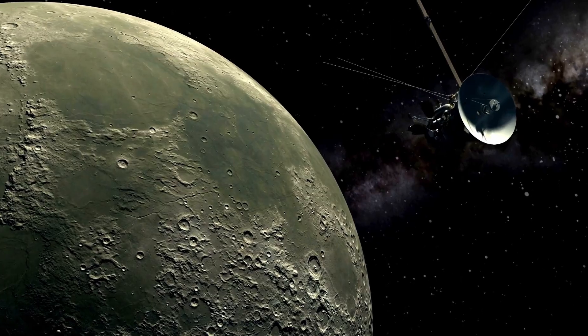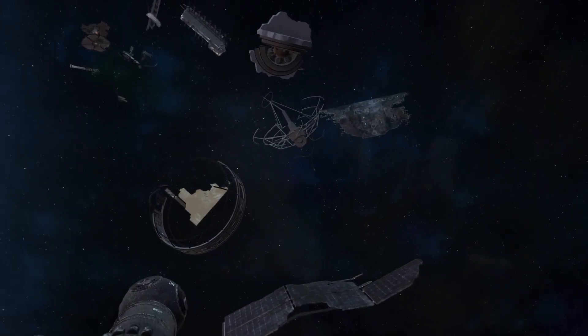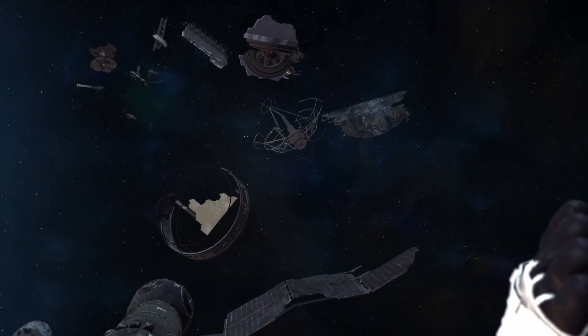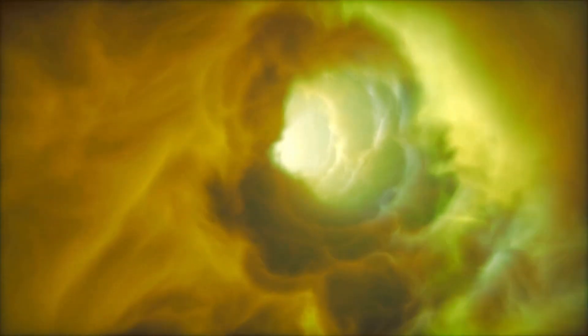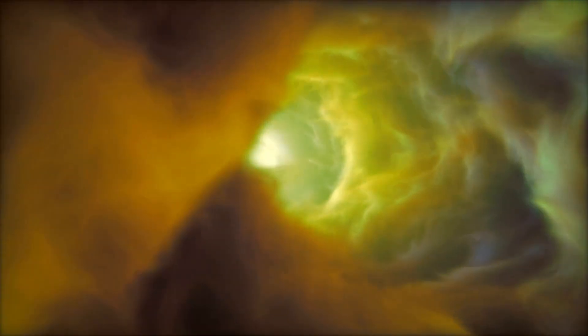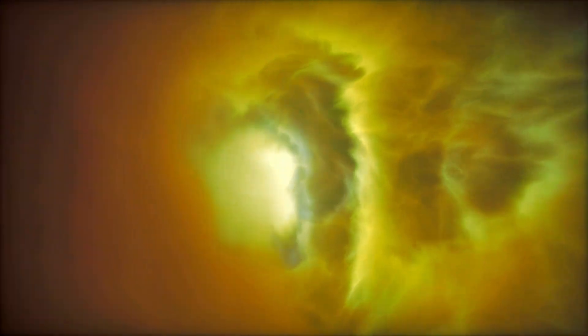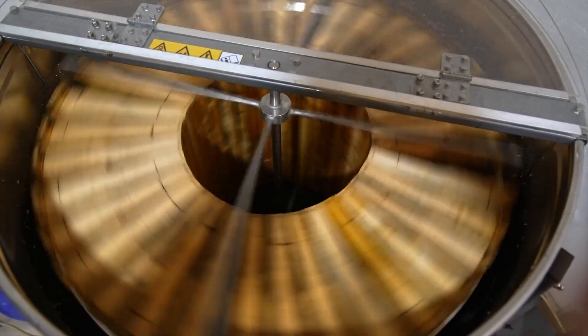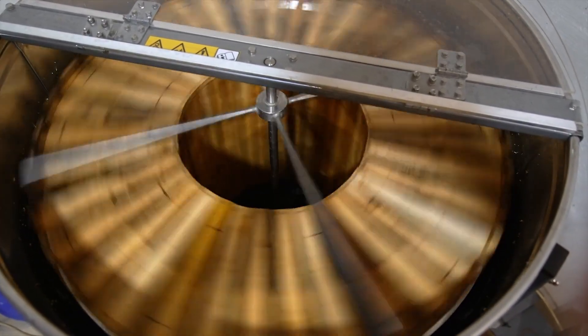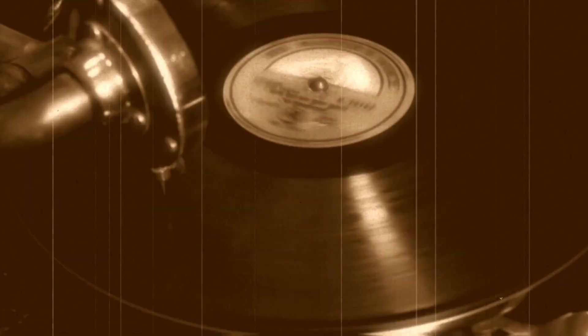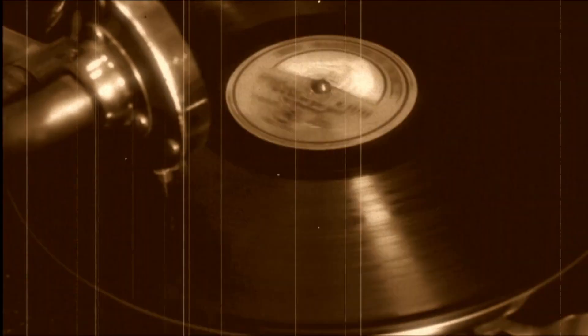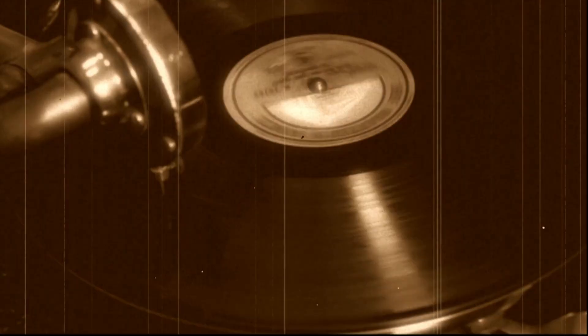Voyager, one now more than 14 billion miles from Earth, has returned an entirely unexpected photograph from the outermost reaches of our solar system. The image comes not from one of today's high-tech instruments, but from a spacecraft launched in 1977, one thought to be long past its imaging prime. Yet this single frame is captivating scientists and astronomers worldwide, triggering debates and fresh theories at the very frontier of known space.